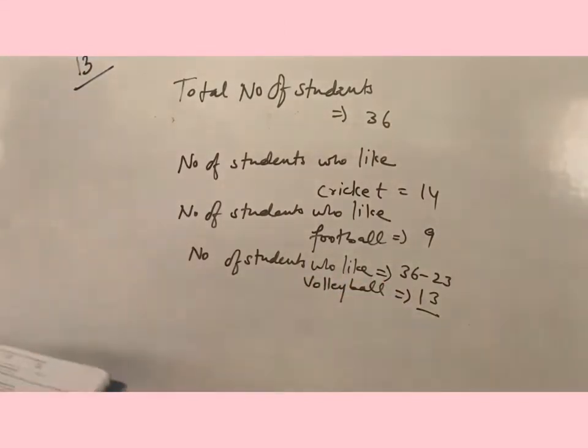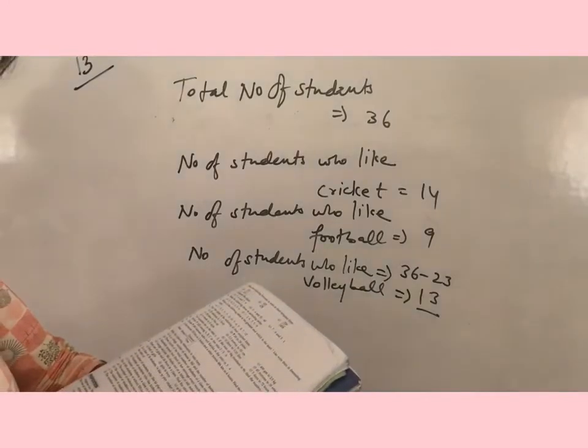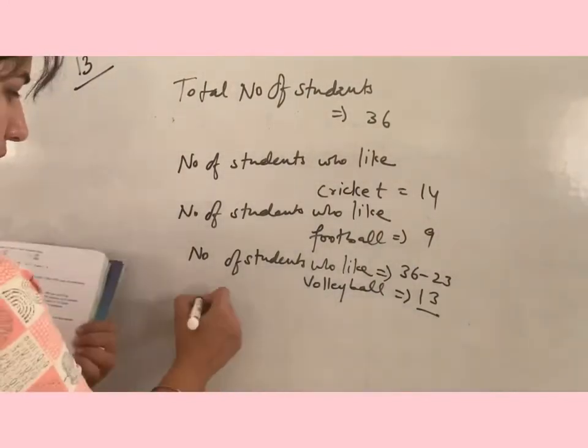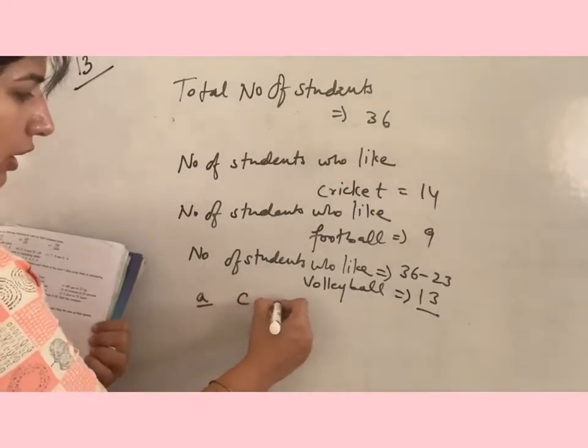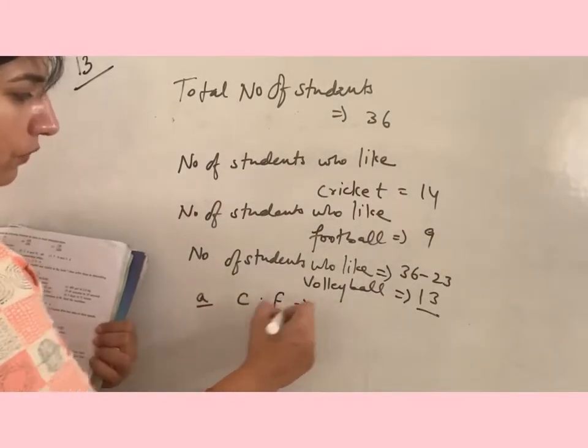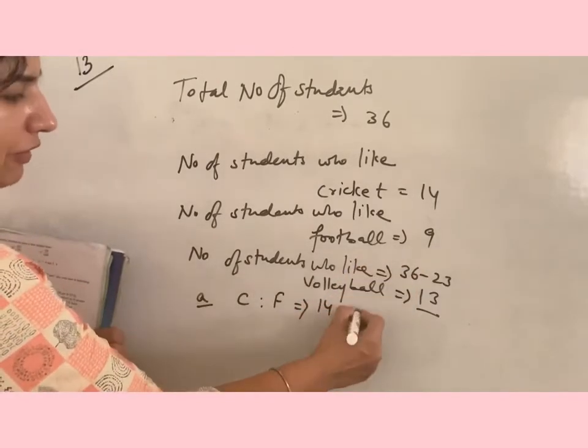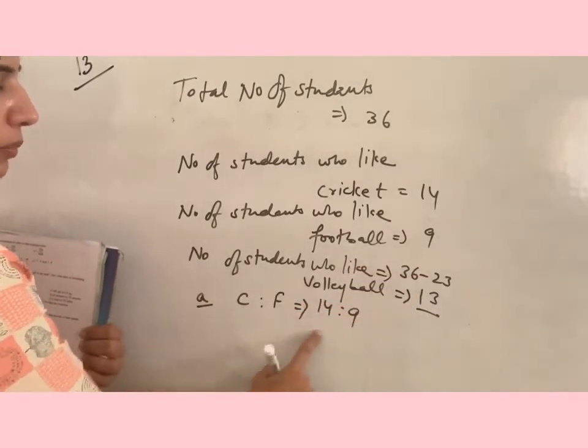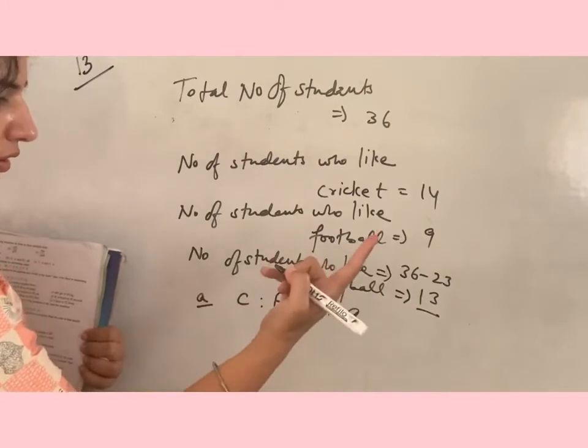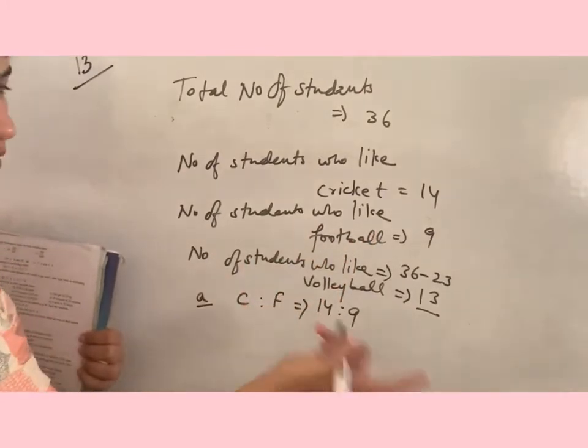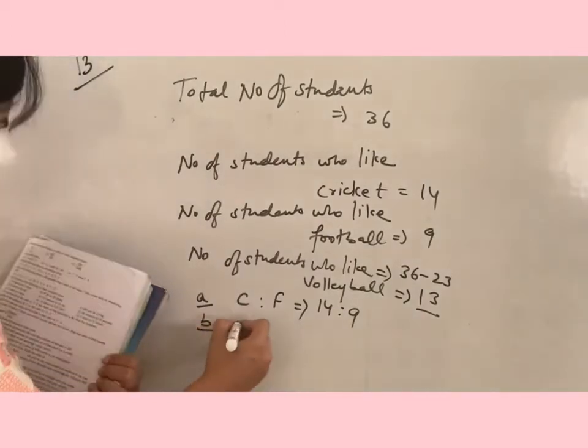Now we have to find out the ratio of students who like to play cricket and football. So in part A, cricket versus football: cricket we have 14 and football we have 9. These both are not going with the same table, so 14 ratio 9 will be your answer.